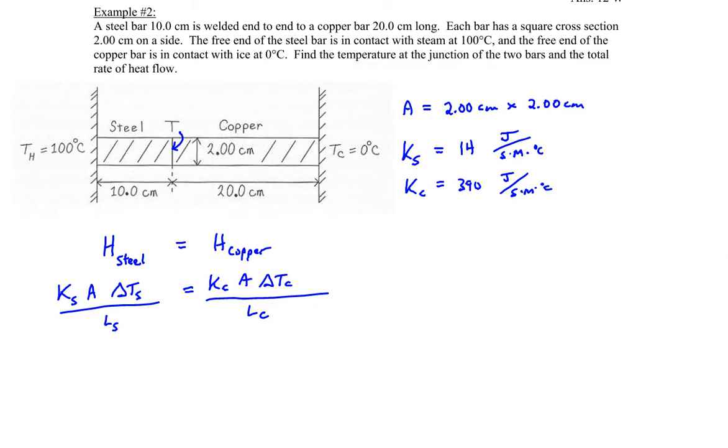And you can see that copper has quite a high thermal conductivity, which means that it's a relatively good conductor compared to steel. Steel is not such a good conductor. It's not an insulator, but it's a poor conductor.